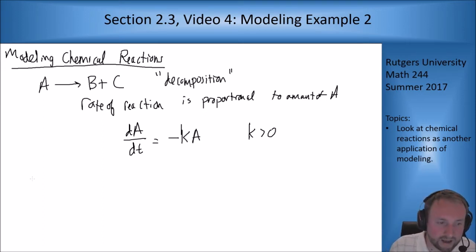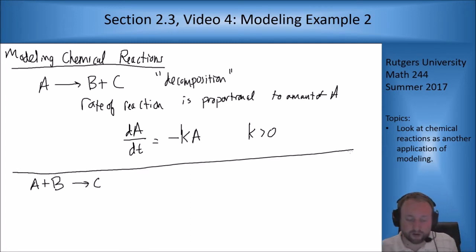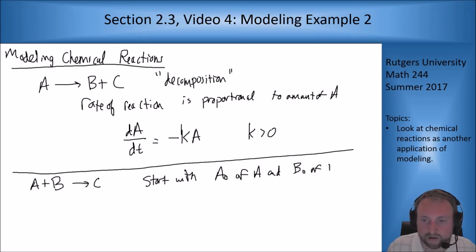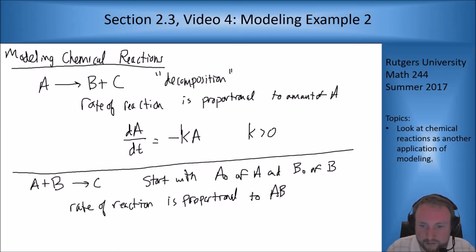Let's look at a few other reactions. Say we have a reaction where you have A and B combine to make C. Say you start with A naught of A and B naught of B. You start with some amount of A and B in a mixture, and this reaction is going to go forward. Now again, in the simplest model, you would assume that the reaction is going to go based on how many times A and B collide with each other. So the rate of reaction is proportional to A times B, because A times B indicates how often A and B are going to collide and come into contact.